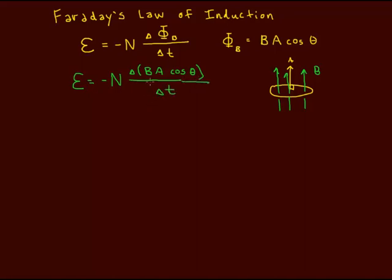Something I should explain here is that it's the change in the flux. Now, if you notice, there's three terms in here. You've got the magnetic field strength, the area, and the cosine of the angle. We can change the flux by changing any of these things.